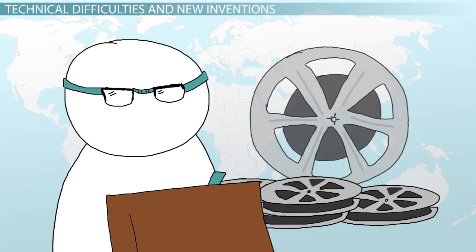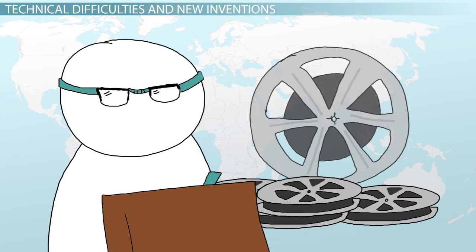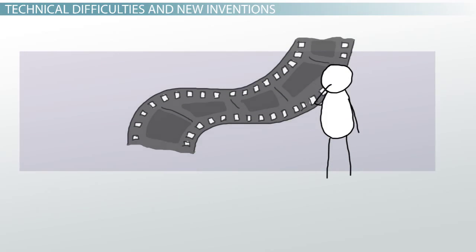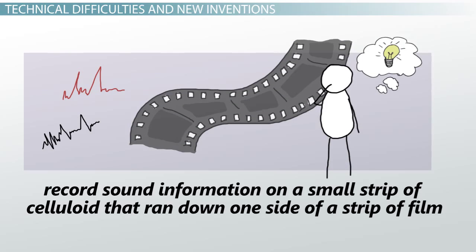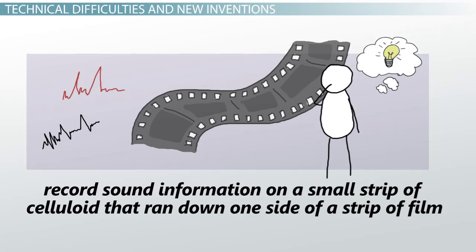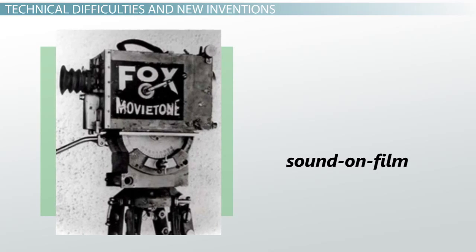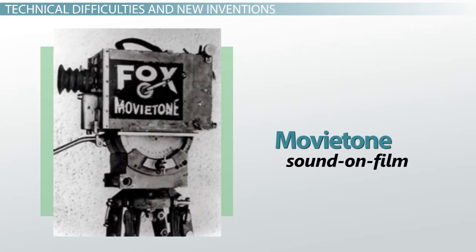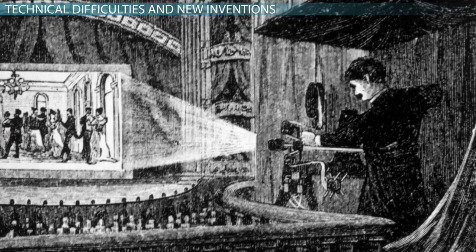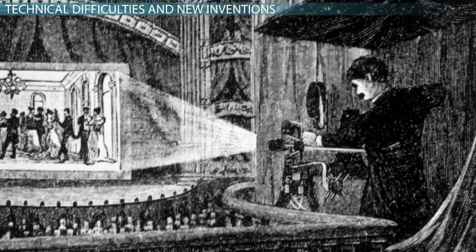Soon, however, a new development changed the movie world forever. Inventors discovered that they could record sound information on a small strip of celluloid that ran down one side of a strip of film. This process, called sound-on-film, or movietone, allowed the picture and the sound to play together in perfect synchronization, at least in theory.